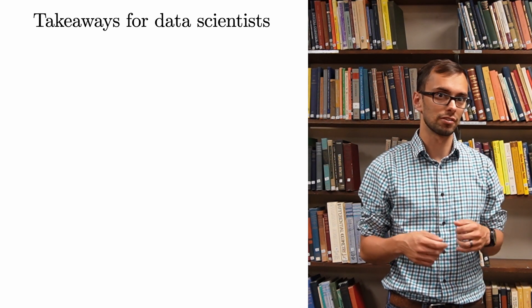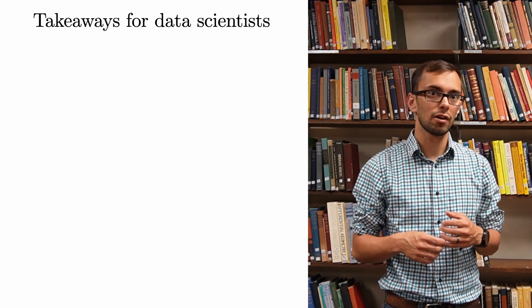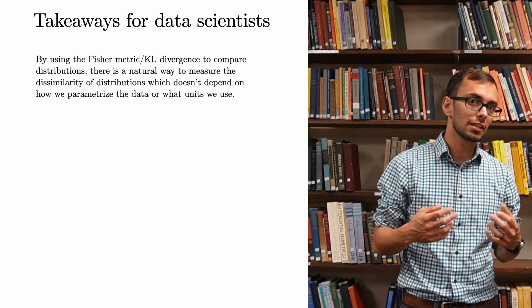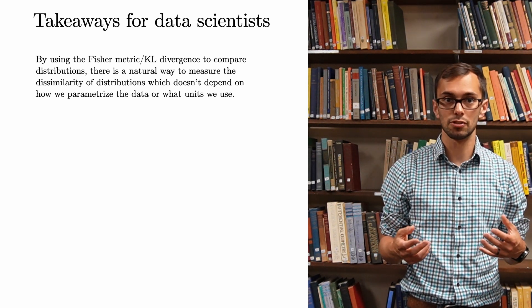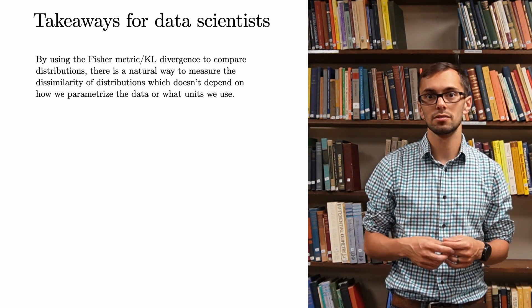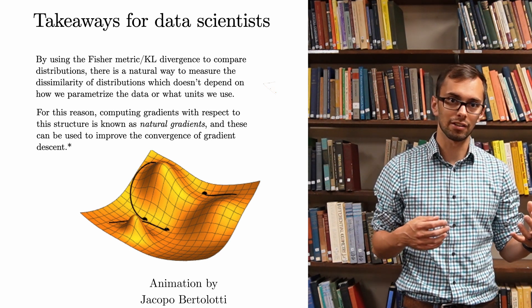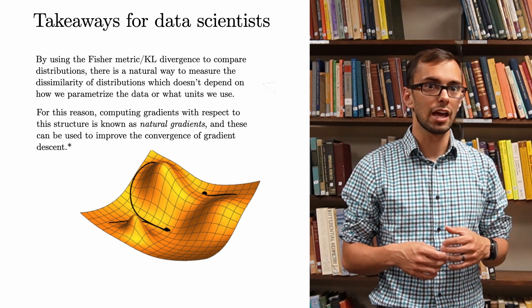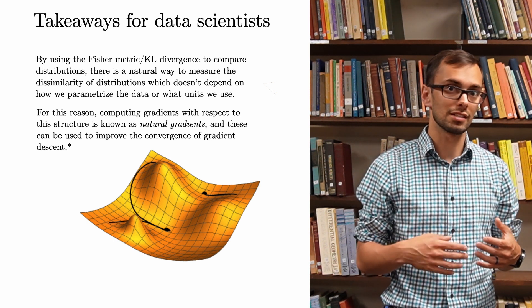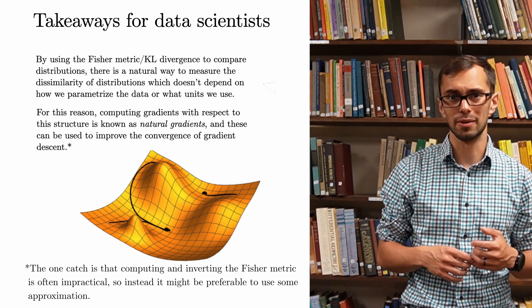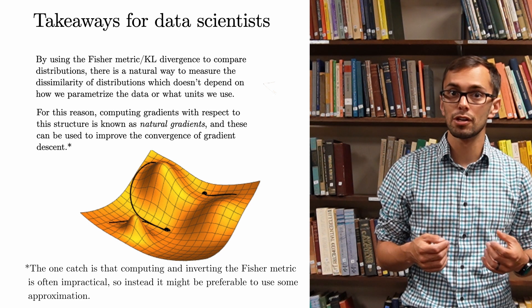I wanted this talk to be of interest to data scientists, and to not just discuss mathematical results. So for the rest of the talk, let me discuss some takeaways that might be useful for people actually working with data. By using information geometry, there's a natural way to measure how different two distributions are. And this doesn't depend on how we parameterize the data, or what units we use. For this reason, we can use this as a background geometry when we compute gradient descent. This is known as natural gradients, and can be used to improve the convergence of gradient descent towards a local minimum. The one catch is that actually doing this requires inverting the Fisher metric. So instead, it might be preferable to use some approximation.